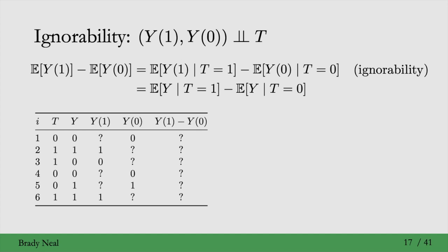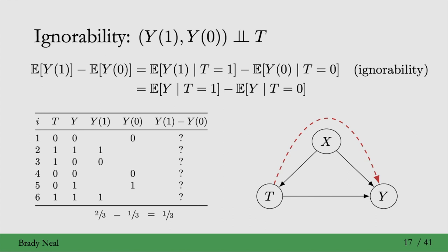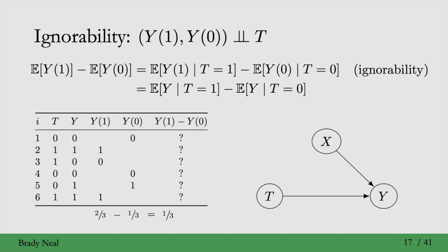One way to see why this assumption is called ignorability is the missing data example: if we were to just ignore the question marks and compute the means and take the difference, we get the ATE under the assumption of ignorability. So if ignorability is true, we can just ignore the question marks. Another way to see this with a causal graph: when there is confounding, we don't have ignorability. If the treatment assignment mechanism — the arrow from covariates to treatment — were ignorable, confounding disappears when we delete that edge.